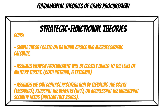Strategic functional theories also tend to assume we can control proliferation by elevating the costs of procurement through things like embargoes, reducing the benefits like the Nuclear Non-Proliferation Treaty, or addressing the underlying security needs of states through things like nuclear-free zones. But as we've found over the last 50 years, even using these three methods of trying to control proliferation, procurement and proliferation of arms has stayed pretty steady. So strategic functional theories tend to break down here.